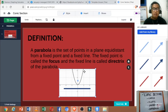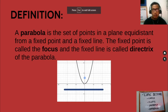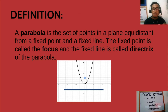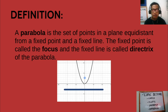A parabola can be opening up or opening down, or it can be opening to the left or opening to the right. Only a parabola opening up or down can be considered a function. A parabola opening to the left or right is just a mere relation, because if we apply the vertical line test, it will cross the graph more than once.